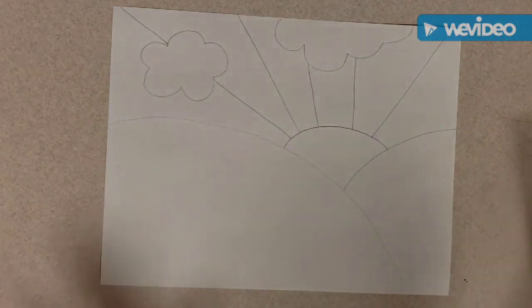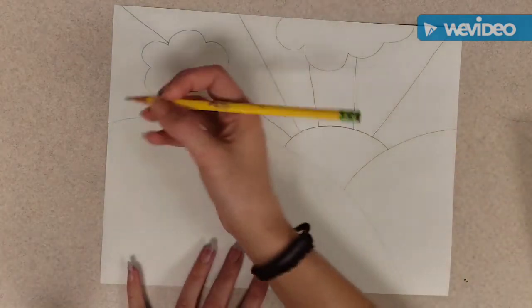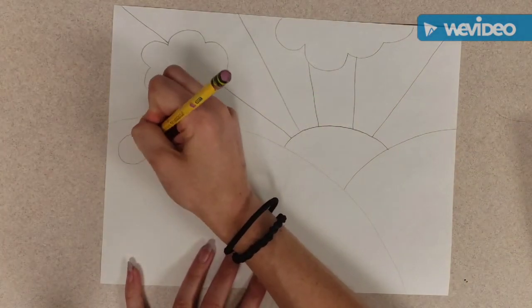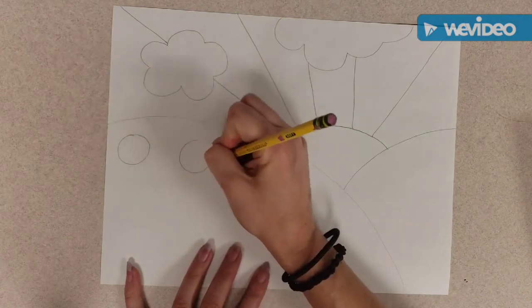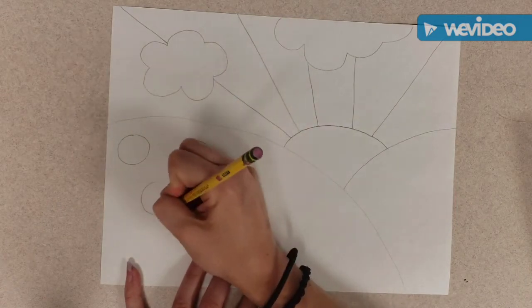So I'm going to start by just putting a pattern into my one section of grass. This one, I think I want to be polka dots. So I'll just go in and draw my polka dots with my pencil.